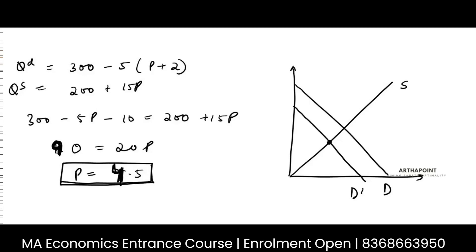My equilibrium is my intersection of demand and supply. I intersected demand to supply. So this new intersection is coming here. This is 4.5.